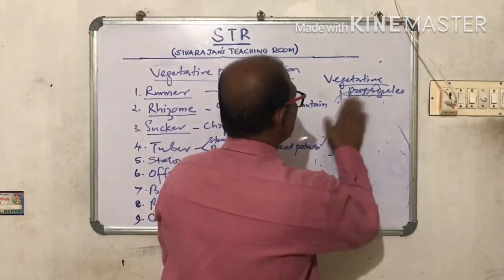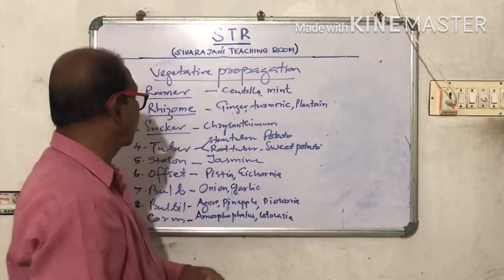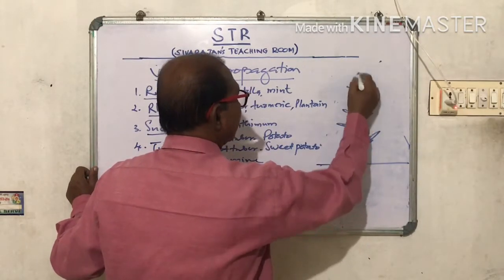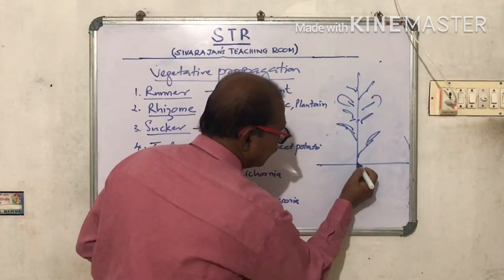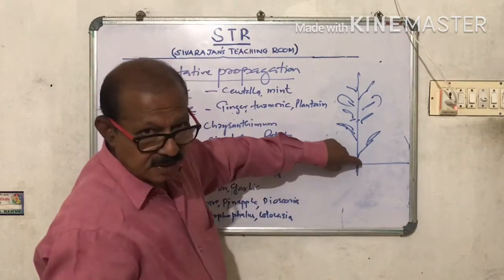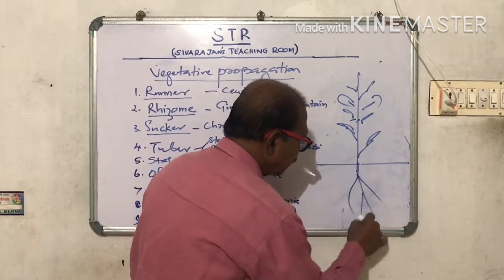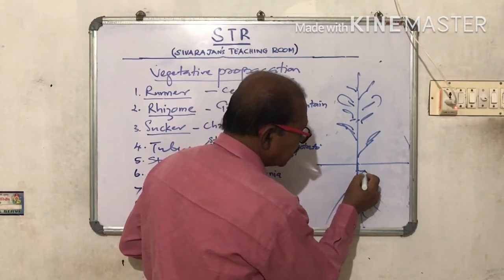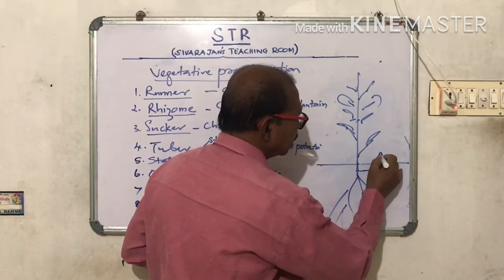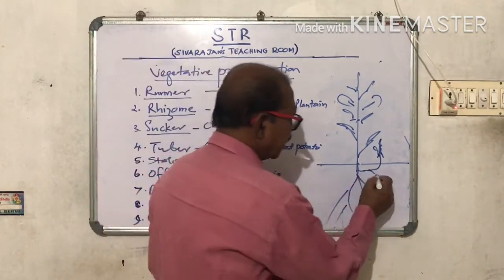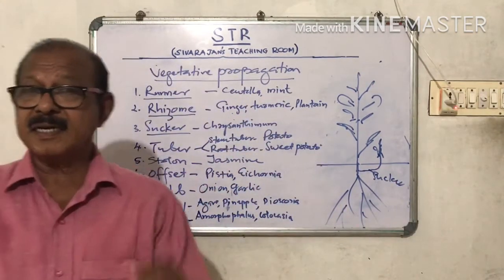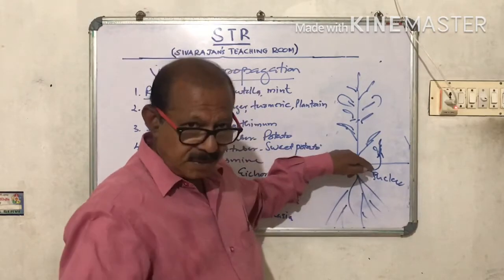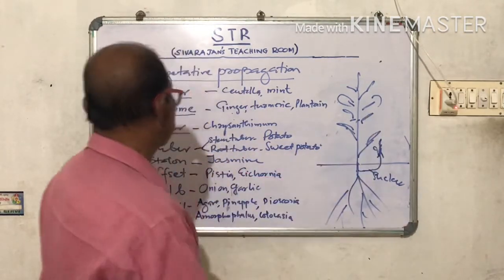Then Sucker. What is a Sucker? This is the soil level. Here is a plant. The plant is growing and some part of the stem is under the soil. From this stem portion, a branch develops and runs below the soil and comes up as a small plant. This structure is the Sucker. The Sucker is a branch of the stem that grows under the soil and comes up like a small plant.